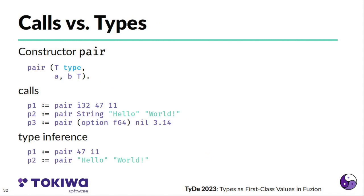When features are called, we provide the type parameters and the value parameters. Just as an example, I have a pair here. It's a pair of two values of the same type T. So it has three arguments, the type and the two value arguments for the actual values. And we create three pairs here, one with two integers, one with two strings. And the third one, which is a pair of type option F64, which is a maybe float value. And the first one is nil and the second is almost pi. And all these calls use all three arguments.